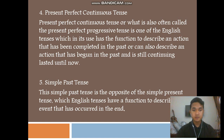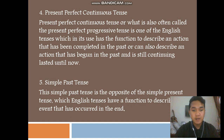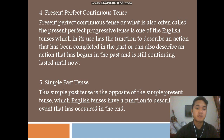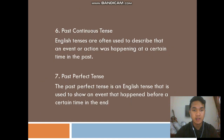Number five: simple past tense. The simple past tense is the opposite of the simple present tense. It is an English tense that has a function to describe an event that has occurred in the past.